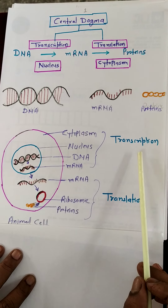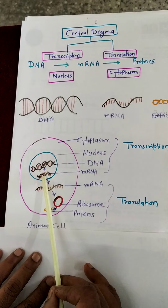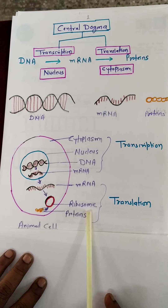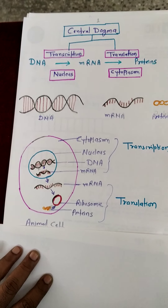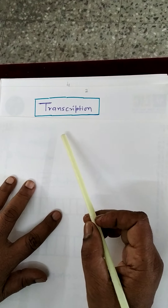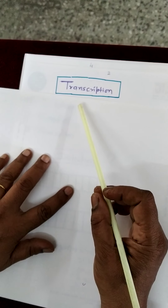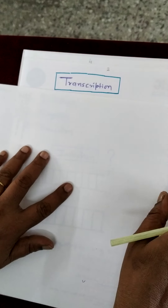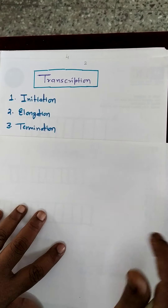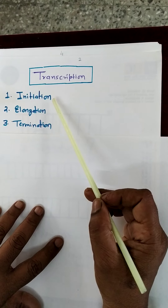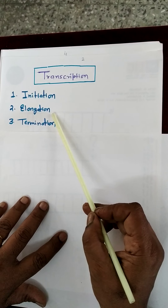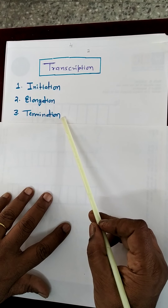Transcription occurs in the nucleus and translation occurs in the cytoplasm inside the ribosome. We will see in detail what transcription is and how it occurs in the nucleus. Transcription has three steps: the first step is initiation, the second step is elongation, and the third step is termination.